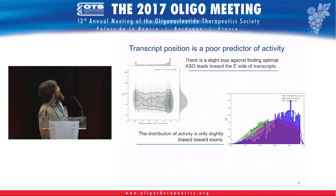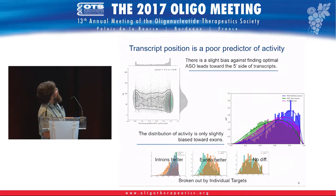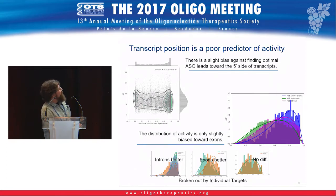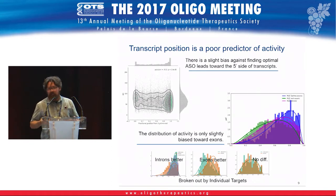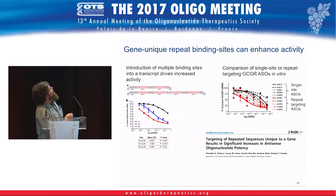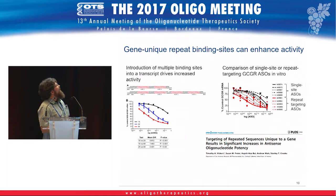What's more vexing is that individual targets each have a different story — for some targets introns are better, for others exons are better, and for some it makes no difference at all. So you're really going to be stuck having to screen. One thing we have definitively shown is that you can enhance activity by looking for gene- or transcript-specific repeats — this is work from Tim Vickers out of the Crooke lab at IONIS.